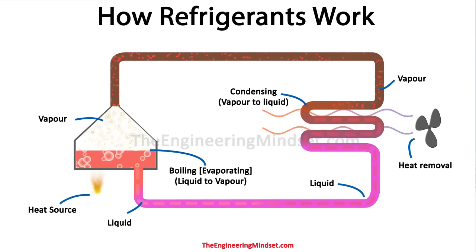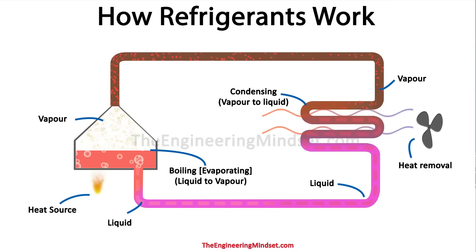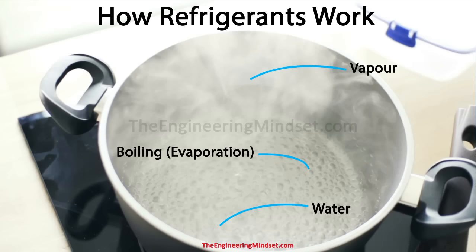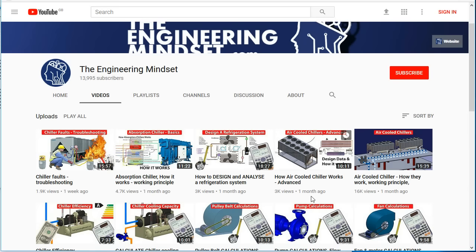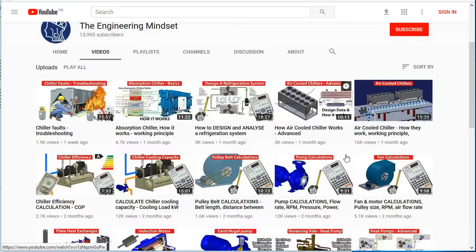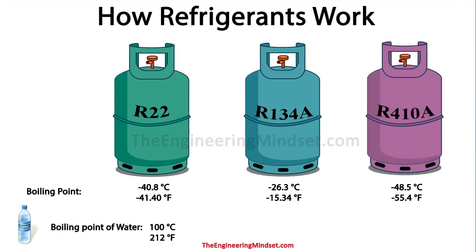When we say refrigerant, what we mean is a fluid that can be easily boiled from a liquid into a vapor and also condensed from a vapor back into a liquid, and this needs to occur again and again without failure. We could use water — it does work and is used in absorption chillers — but the reason we don't typically use water in common refrigeration units is because there are specially made refrigerants designed specifically for the task, so they're able to perform much better.